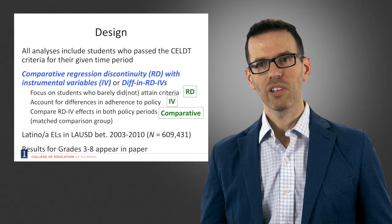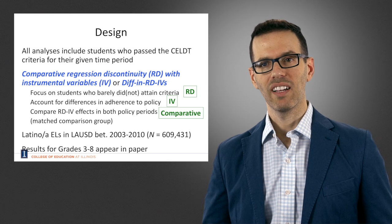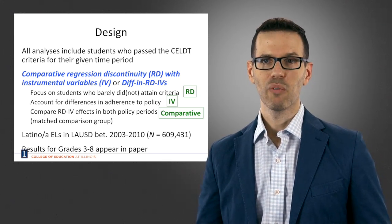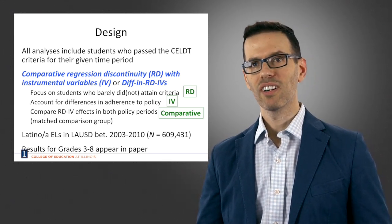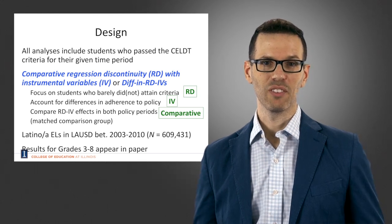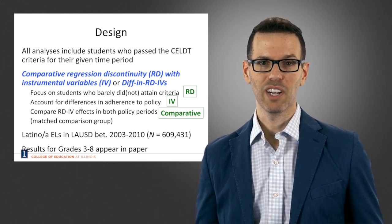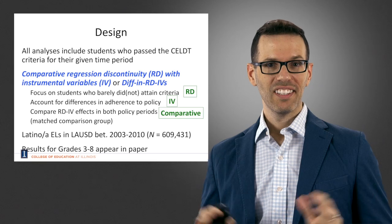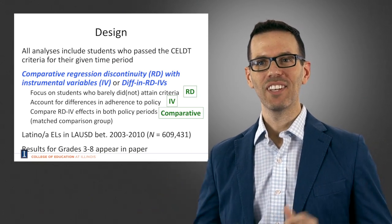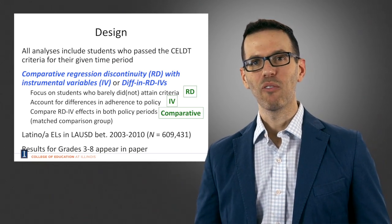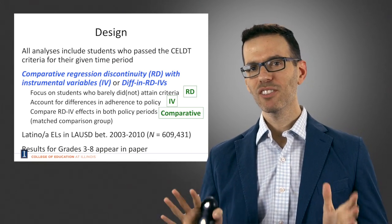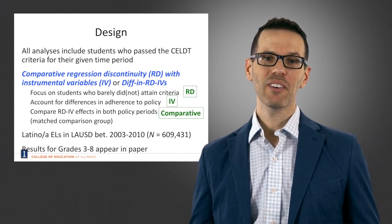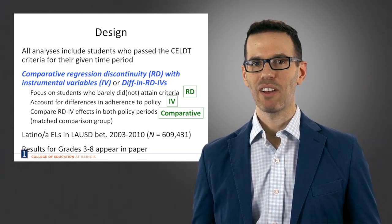We will perform an analysis called a comparative regression discontinuity with instrumental variables — also called a difference-in-regression-discontinuities with instrumental variables. That's a lot to understand, so let me explain the design. I won't show equations here, but if you're interested, you can refer to the papers referenced earlier.